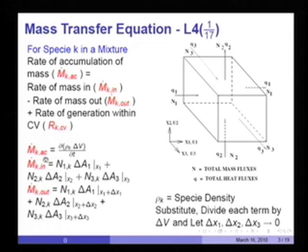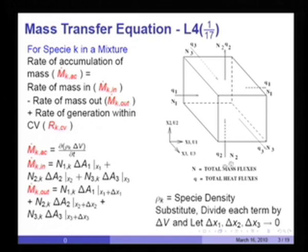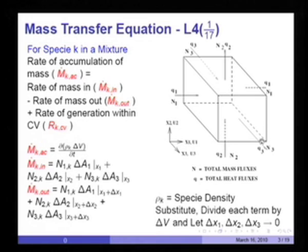What is m-dot-k accumulation? That is simply the mass of species k within the control volume: d/dt of ρ_k · δV. The mass of species in will be the flux of species k in direction 1 multiplied by area δA₁, plus N₂k from the bottom multiplied by δA₂, plus N₃k multiplied by δA₃ at x₃. Likewise, the same quantities at the outgoing faces at x₁+δx₁, x₂+δx₂, and x₃+δx₃.